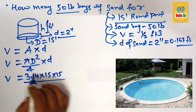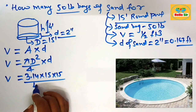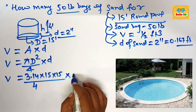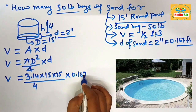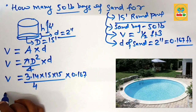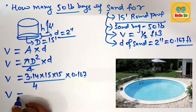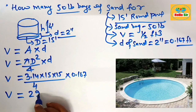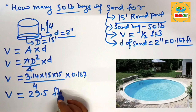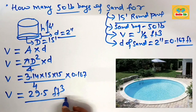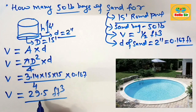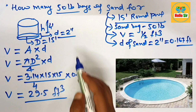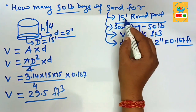Putting in all the values: π = 3.14, diameter = 15 feet, so 15 squared divided by 4, multiplied by the depth of sand 0.167. The volume of sand comes out to about 29.5 cubic feet.